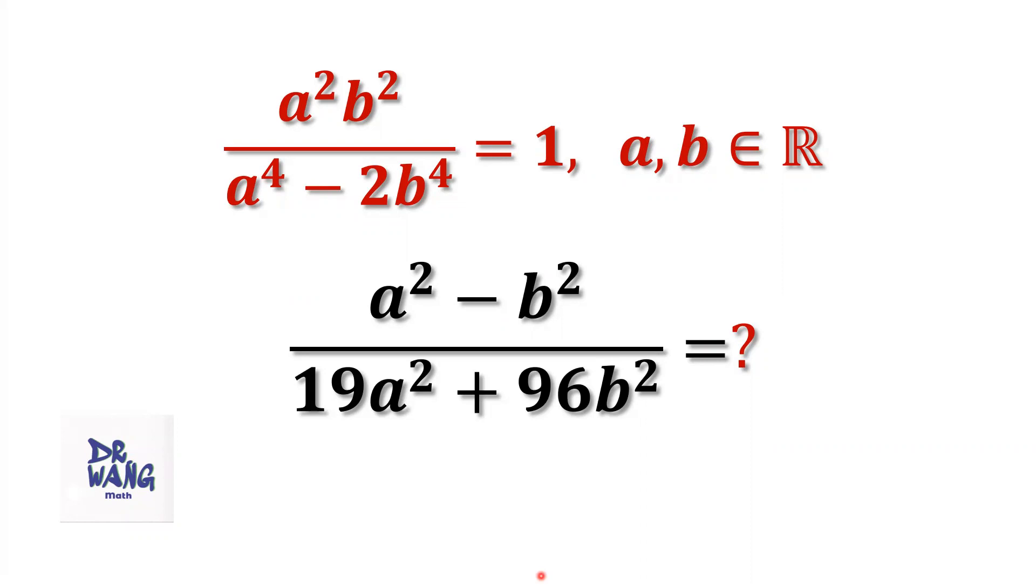If a squared times b squared over a to the power 4 minus 2 times b to the power 4 equals 1, where a and b are real numbers, what is the value of a squared minus b squared over 19 times a squared plus 96 times b squared?